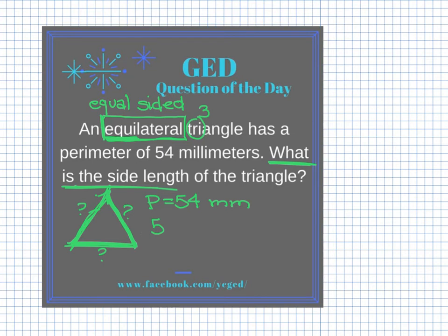We got the pen working again. The total distance around the outside of this triangle is 54 millimeters, and I know that distance is broken into three equal pieces — these three side lengths are equal. So I'm going to use the mathematical operation that divides things into equal-size pieces: division.